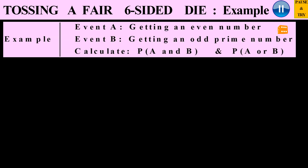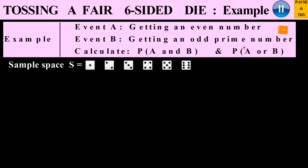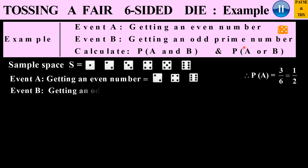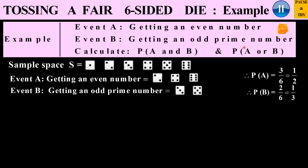Let's consider tossing a fair six-sided die. Event A is obtaining an even number; event B is obtaining an odd prime number. We want to calculate P(A ∩ B) and P(A or B). The sample space is {1, 2, 3, 4, 5, 6}. Event A — even numbers — is {2, 4, 6}, so P(A) = 3/6 = 1/2. Event B — odd prime numbers — is {3, 5}, so P(B) = 2/6 = 1/3.